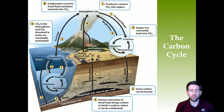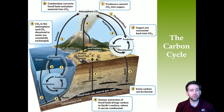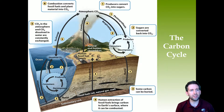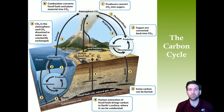Step four: human extraction of fossil fuels brings carbon to Earth's surface where it can be combusted — we extract fuel and coal, and burning these releases CO2. Step five: CO2 in the atmosphere and CO2 dissolved in water are constantly exchanged, since the atmosphere is always in contact with the ocean. Step six: combustion converts fossil fuels and plant material into CO2. Essentially, carbon is taken in through natural processes and we add to it by burning fossil fuels.